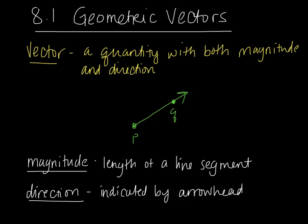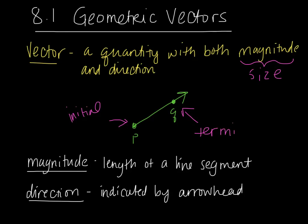A vector is a quantity with both magnitude and direction. Magnitude just means size, and direction obviously means it's pointed in a certain direction. Vectors usually have two points: an initial point where it starts, and a terminal point — not necessarily where it ends because it goes through that point, but that's how we might name it.